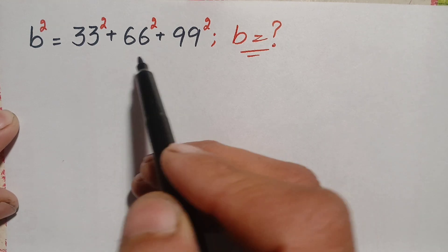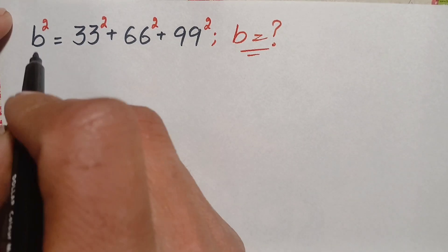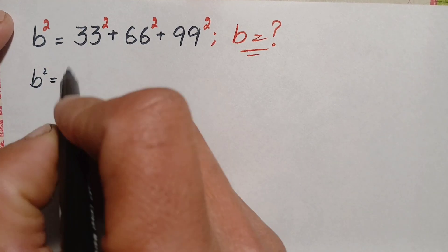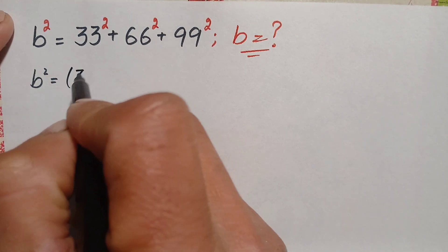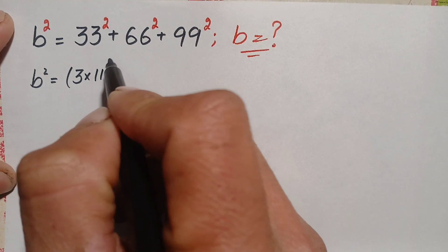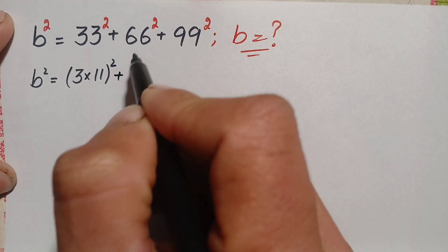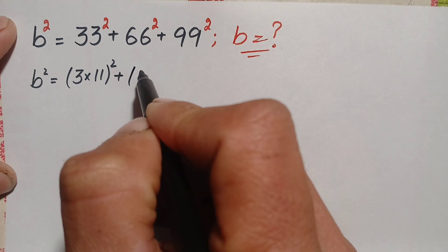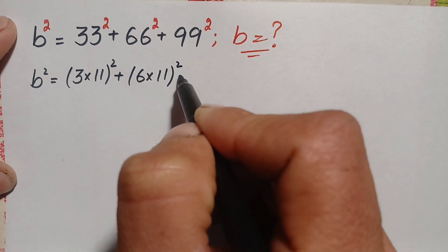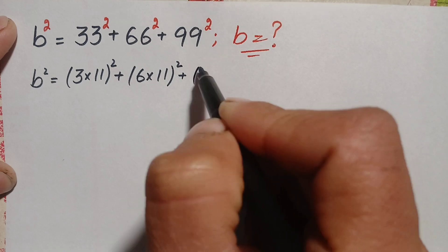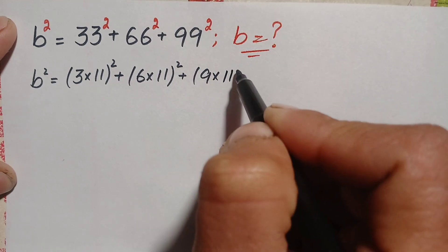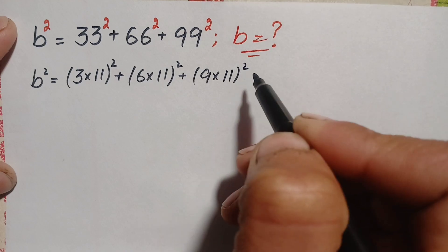So we can write the right-hand side as: b² = (3 × 11)² + (6 × 11)² + (9 × 11)², since 33 = 3 × 11, 66 = 6 × 11, and 99 = 9 × 11.